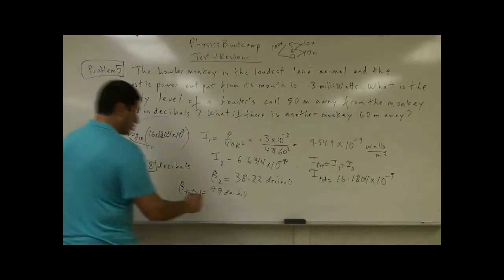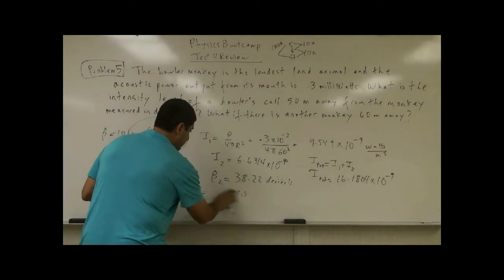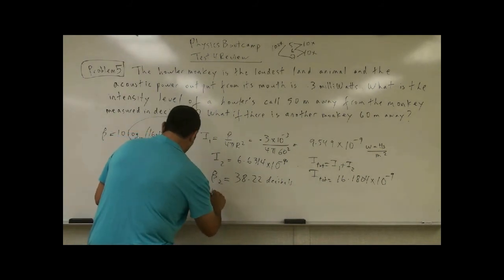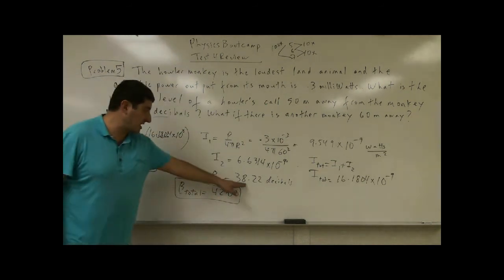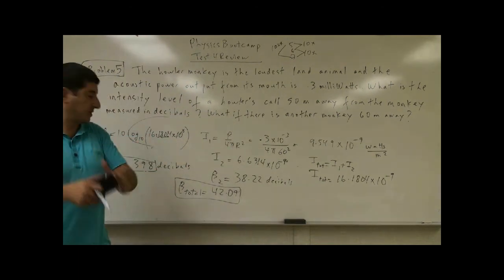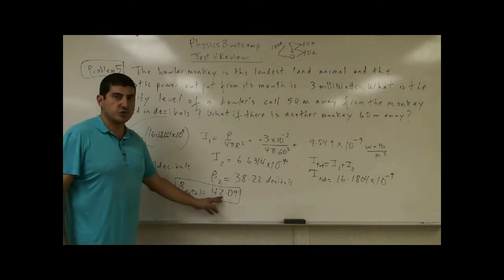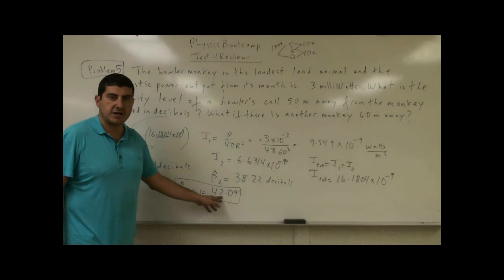So it's 42. So the total decibels is actually 42.09. So it went, if you have a 39.8 and a 38.2, we added them, it only gave us 42. You see, so the logarithmic scale is way different. You can't just add two numbers and get a scale.